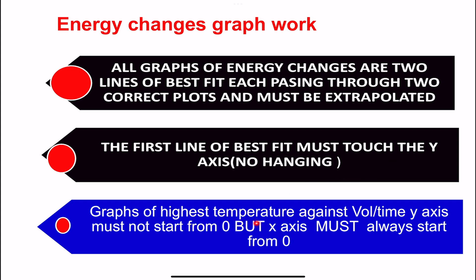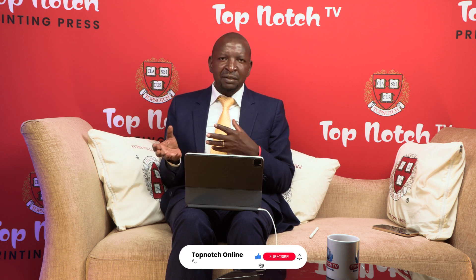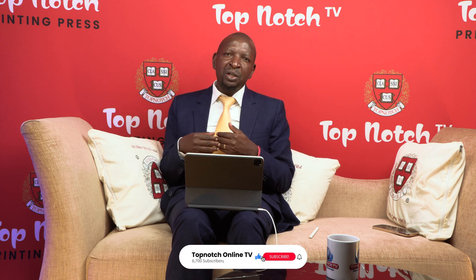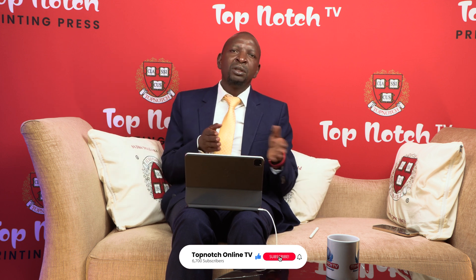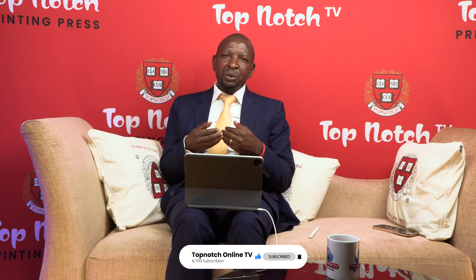For the graph of highest temperature gain as volume or time, the y-axis must not start from zero-zero. As I was telling you in the previous lesson, if your initial temperature is 23, why would you need to start from zero? In that kind of scenario you may not get the mark for scale.